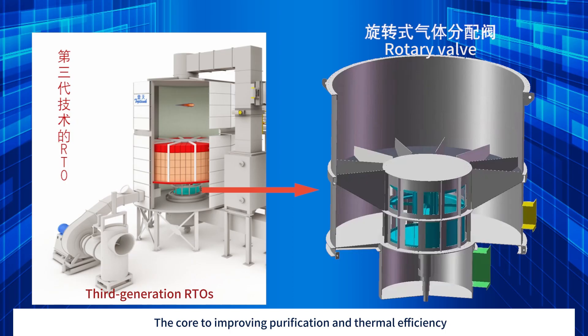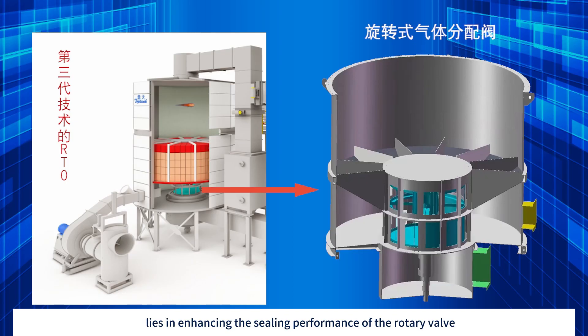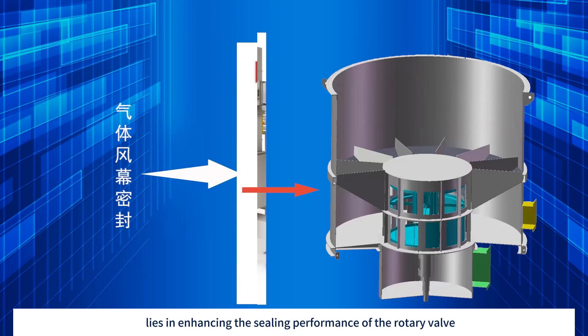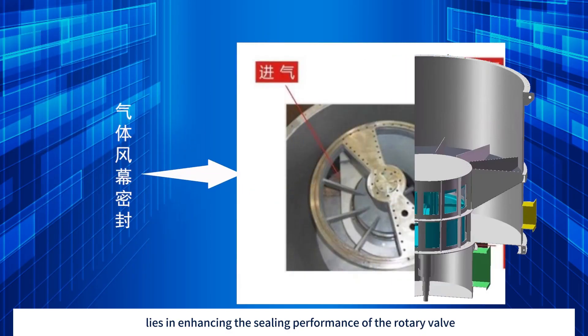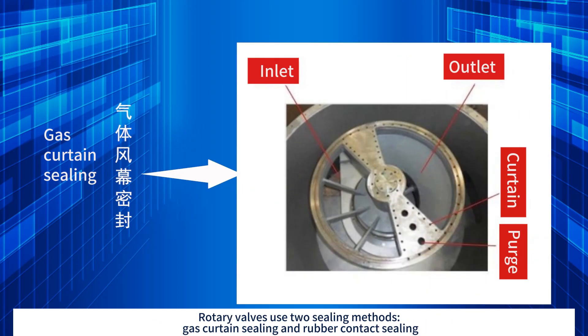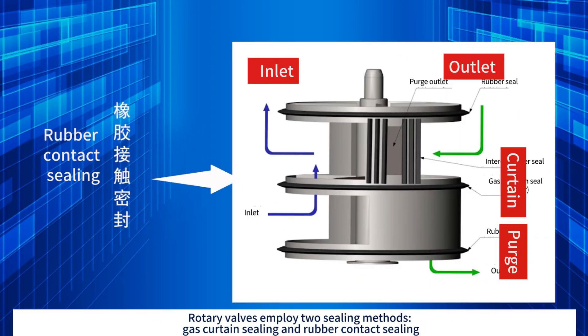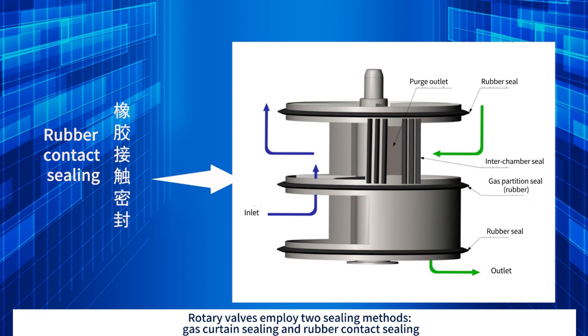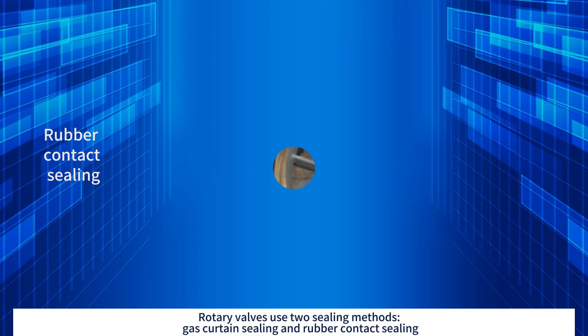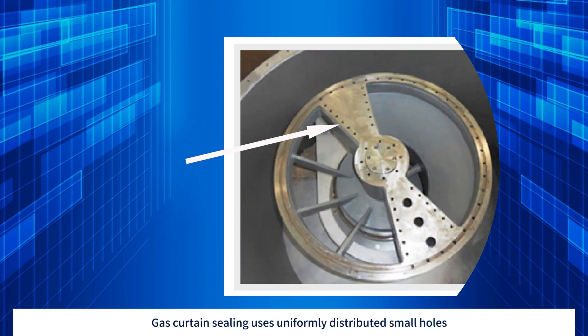The core to improving purification and thermal efficiency lies in enhancing the sealing performance of the rotary valve. Rotary valves use two sealing methods: gas curtain sealing and rubber contact sealing.